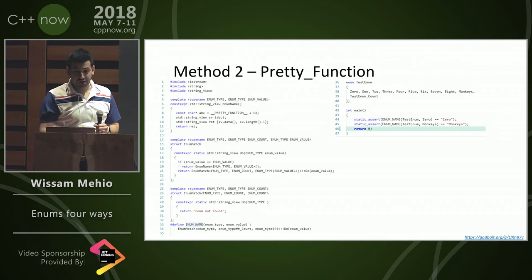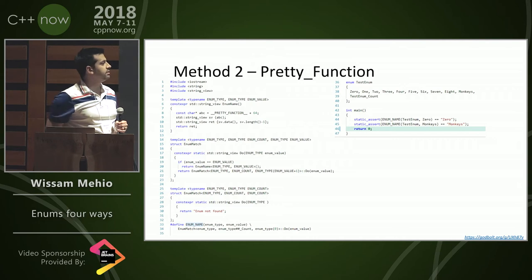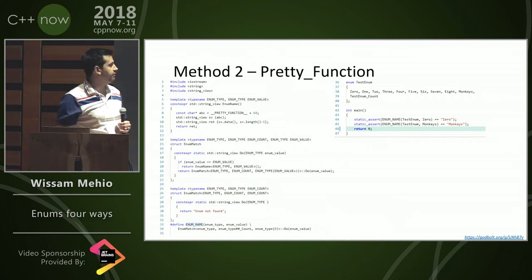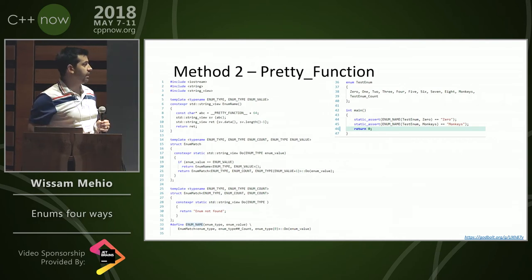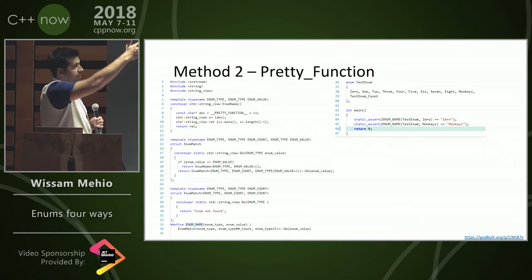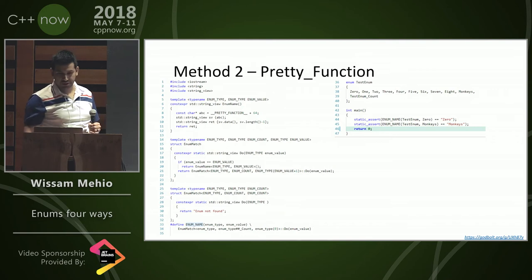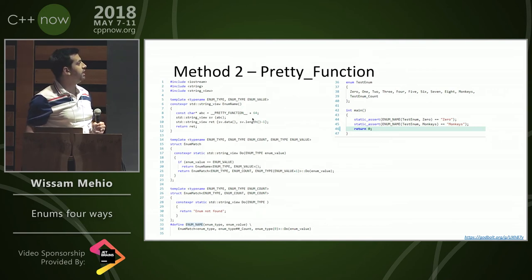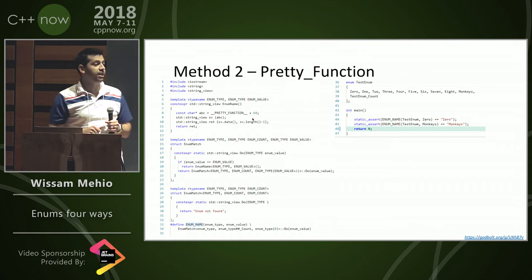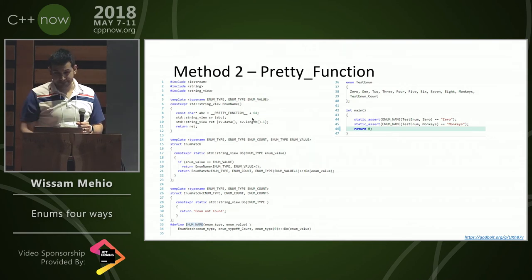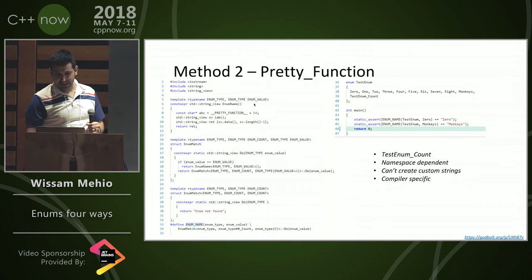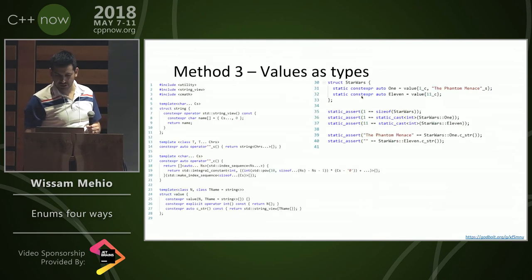Method 2: __PRETTY_FUNCTION__. Same layout — usage on the right, the gory details on the left. We're going to use static recursion, go over all the enums, and use some __PRETTY_FUNCTION__ voodoo to get exactly the name of that enum. Sounds good, except that it requires a 'test_enum_count' value for that library to work.